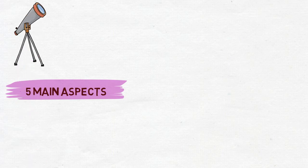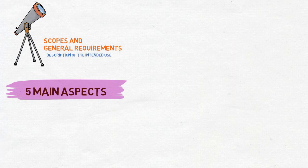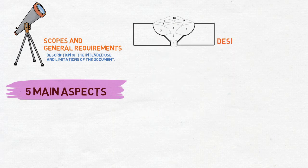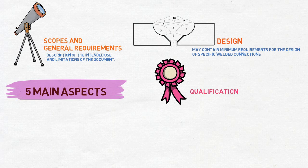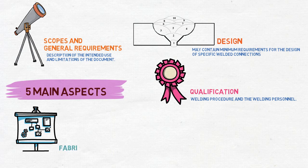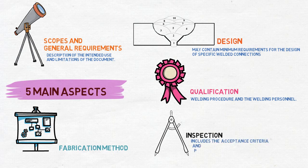In general, welding codes and standards cover five main aspects. First is the scope and general requirements, which provide a description of the intended use and limitations of the document. Second is the design aspect, which may contain minimum requirements for the design of specific welded connections. Third is the qualification aspect of the welding procedure and welding personnel. Fourth and fifth, codes and standards cover fabrication methods and inspection, which includes acceptance criteria and procedures for non-destructive testing.